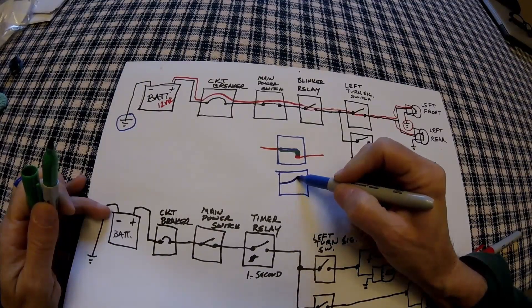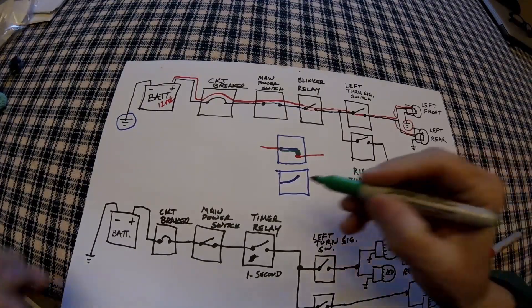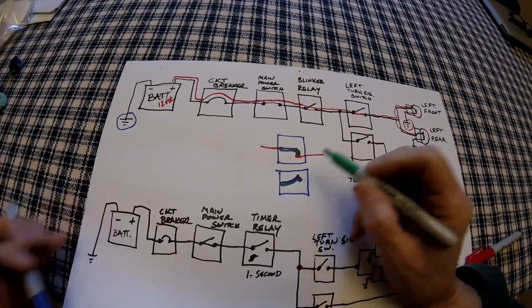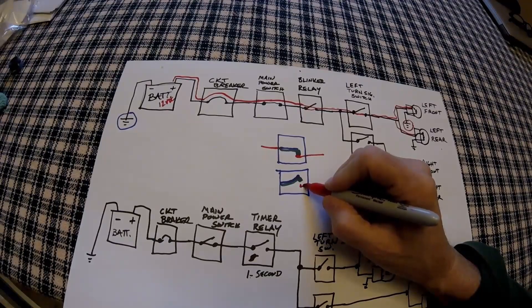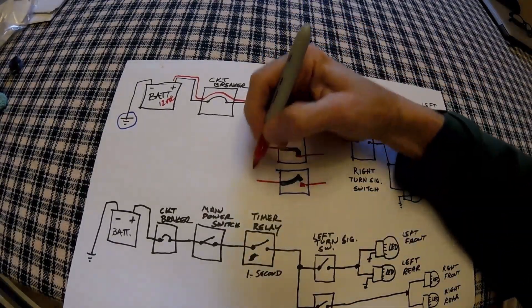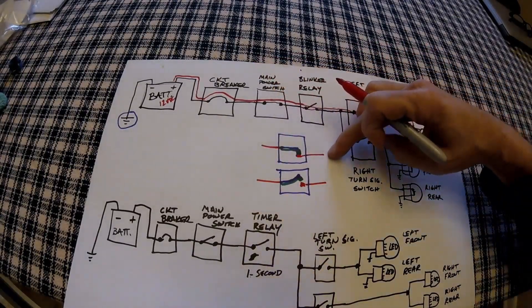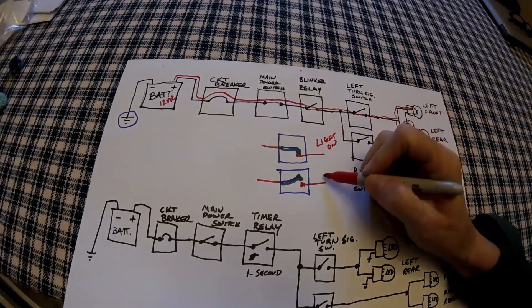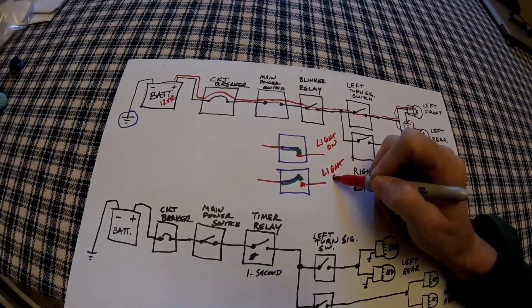When power is flowing through this, it causes the blue metal to curl up faster than whatever this green metal may be. And now the contact is no longer touching the other contact. And it opens the circuit causing the light to go out. So here your lights on. And here your light is off.